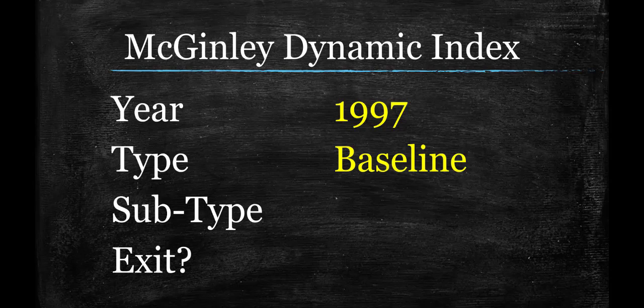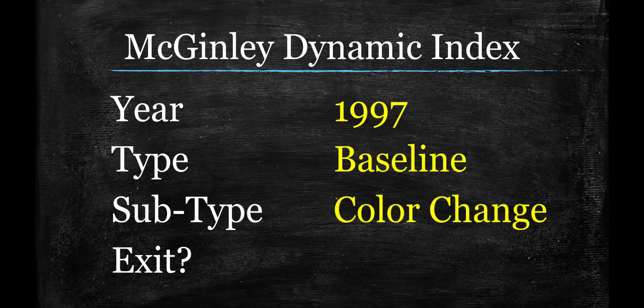You will see in a moment the subtype — this is also a color change indicator. It does things that most baselines don't do. It actually gives you a signal: it's green for long, red for short. Very easy. Can this be used as an exit indicator? Well, baselines can — they're often pretty good at that, especially to get you out of a losing trade at a very cheap price. But you can't use it exclusively as your exit indicator, so I put yes/no on that one.